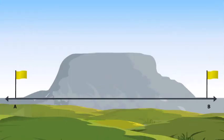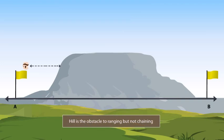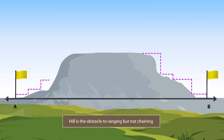Let's say you have to measure the horizontal distance between points A and B, which are separated by a hill. These stations are not inter-visible because the hill is the obstacle to ranging. Note that there is no obstacle to chaining, as you can carry out stepping on the slopes of the hill.